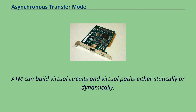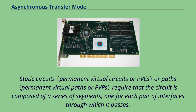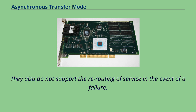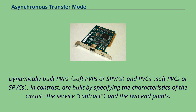Static circuits or paths require that the circuit is composed of a series of segments, one for each pair of interfaces through which it passes. PVPs and PVCs, though conceptually simple, require significant effort in large networks and do not support the rerouting of service in the event of a failure. Dynamically built PVPs and PVCs, in contrast, are built by specifying the characteristics of the circuit and the two endpoints. ATM networks create and remove switched virtual circuits on demand when requested by end equipment.